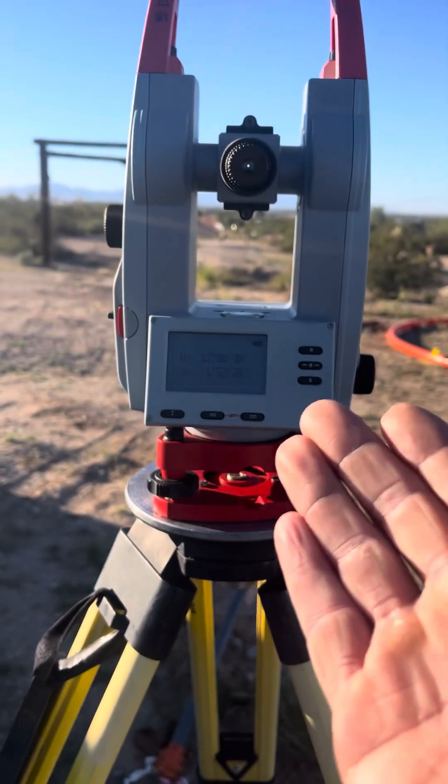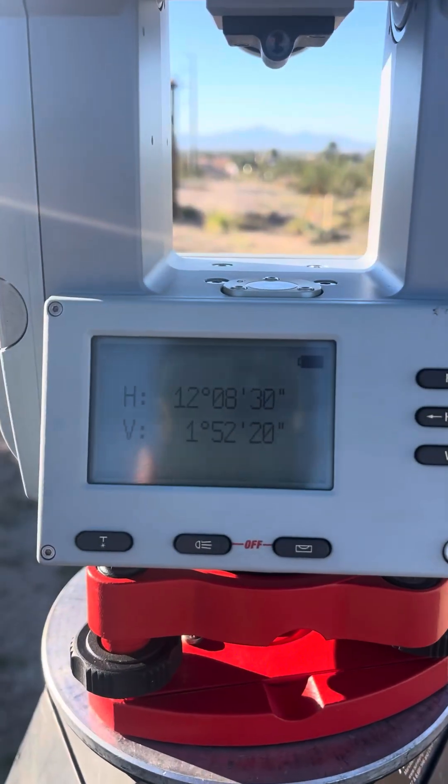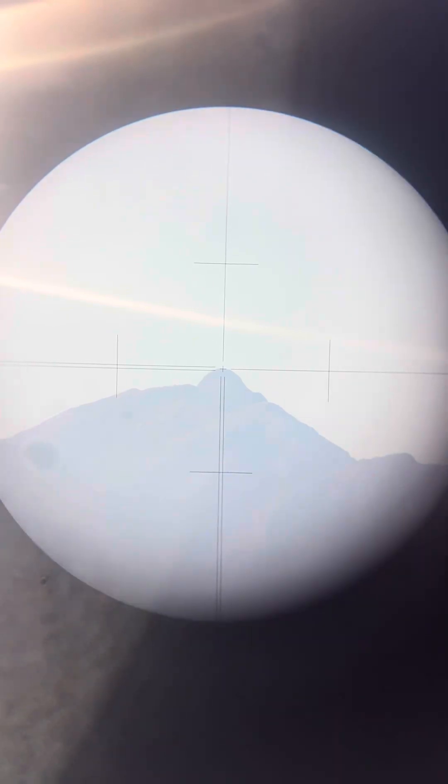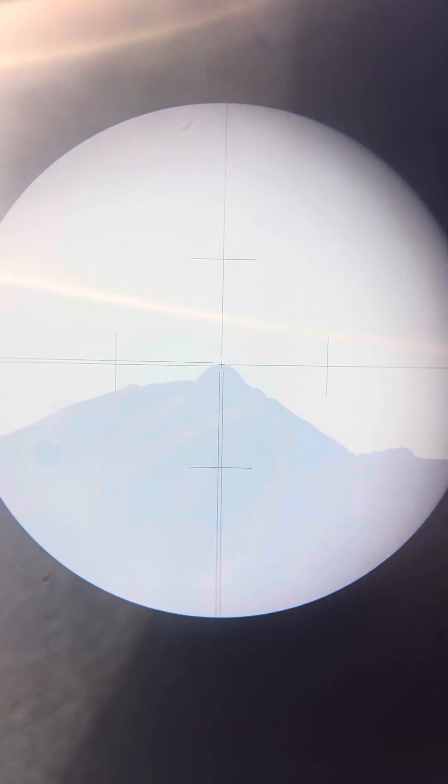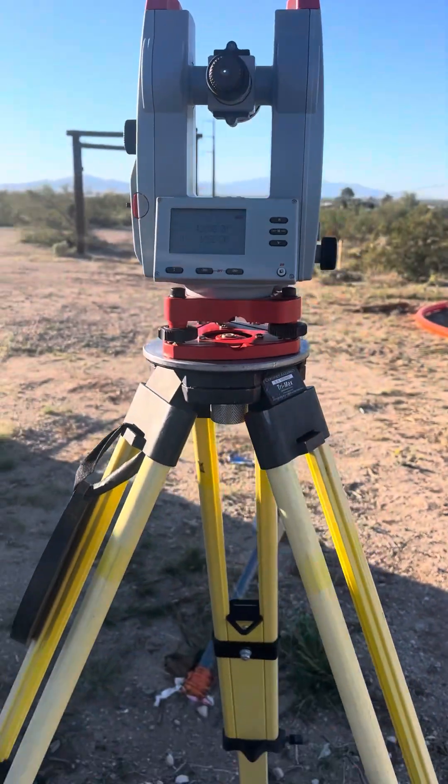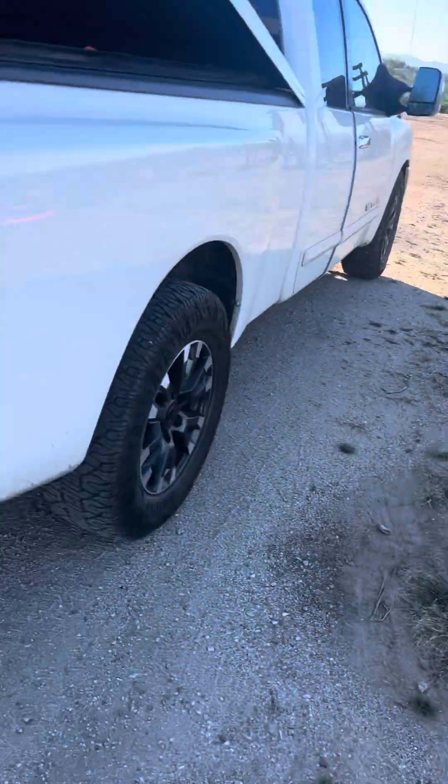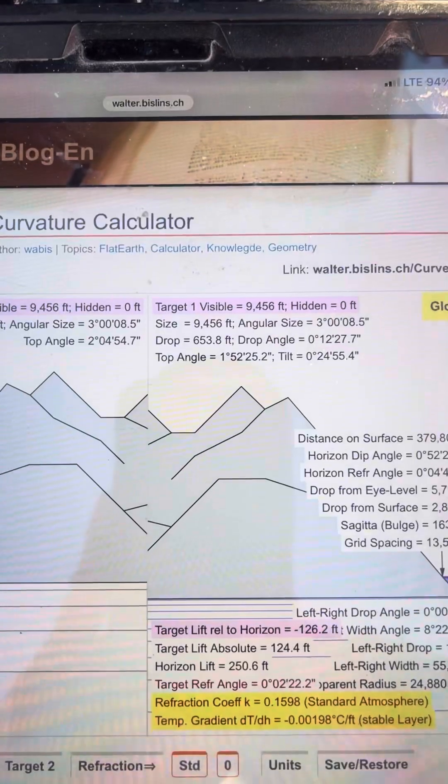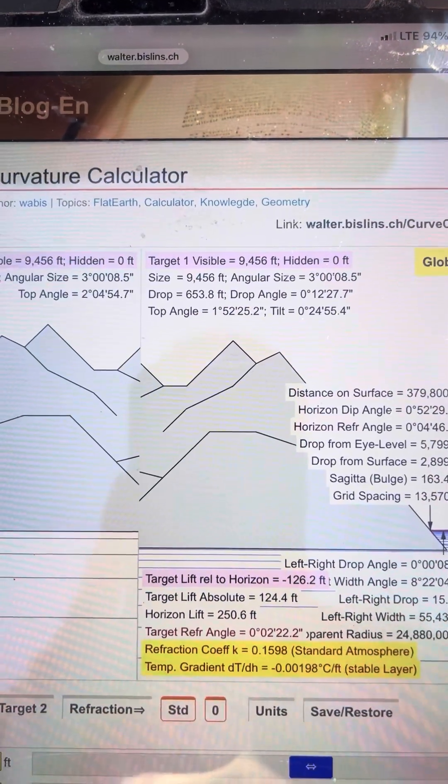What am I measuring? I've got 1 degree 52 minutes 20 arc seconds. And what does Bislin say we should have? This one says that I should have 1 degree 52 minutes 25 arc seconds.